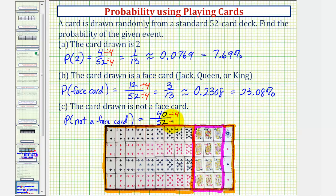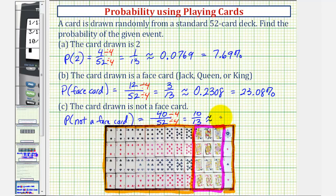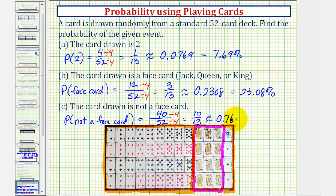And again, simplifying, common factor of four gives us 10/13, which as a decimal would be approximately 0.7692. Which would be 76.92%.